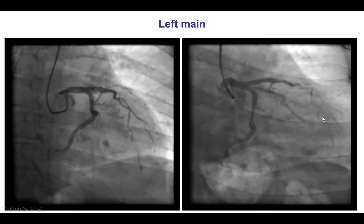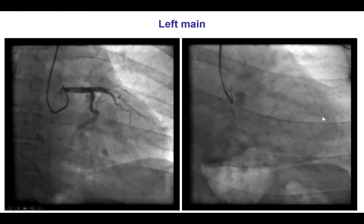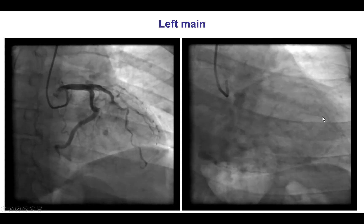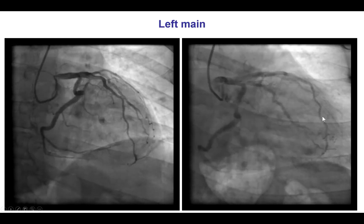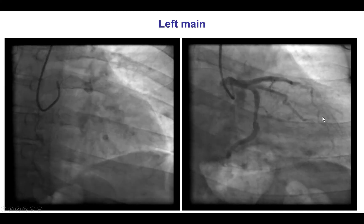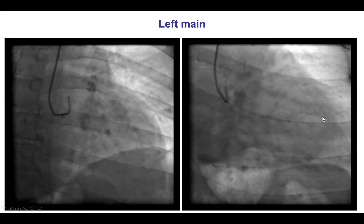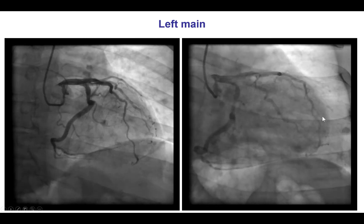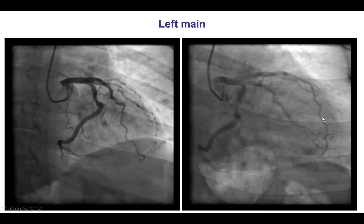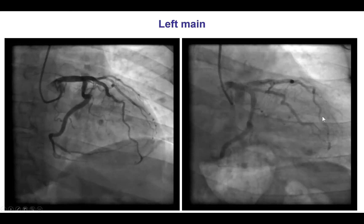He was taken emergently to the cardiac cath lab, where coronary angiography done using radial access demonstrated no significant lesions in the left coronary system. Of note, radial access is the preferred strategy for ST-elevation myocardial infarction, especially when aggressive anticoagulation is given. And second, in patients with a culprit that is presumed to be in the right coronary artery, there has been some controversy about whether to image the left coronary first or go straight to the culprit in order to decrease the door-to-balloon time.